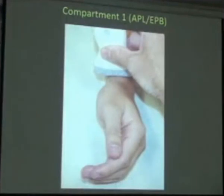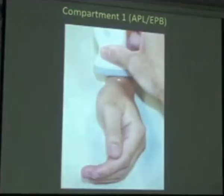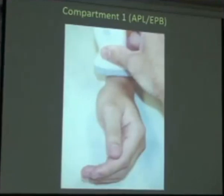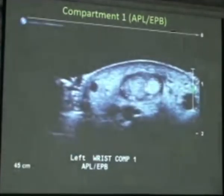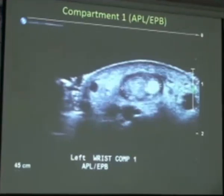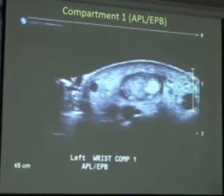The procedure to image this is quite simple. I sit the patient on a chair beside the bed with their arm resting on the bed. I do not use any standoff media — I just place the probe directly onto the wrist. The APL is the larger of the two tendons, and the EPB is right next door. It may look like a single sheath, but there's often a little separation that you don't appreciate until you start the injection.